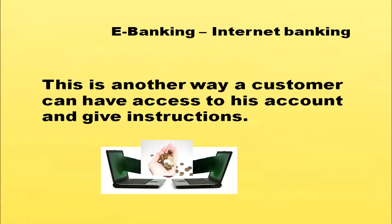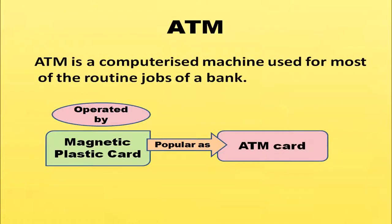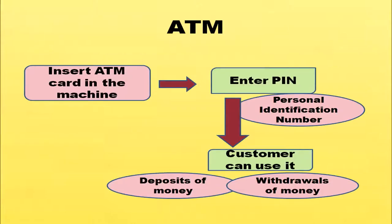Internet banking is another way a customer can have access to his account and give instructions. It makes the task of the customer easy as he can access his account anywhere, anytime, and any number of times. Automated Teller Machine (ATM) is a computerized machine used for most routine banking jobs. A magnetic plastic card known as the ATM card is given to the customer, who must insert it and enter their PIN to deposit or withdraw money.